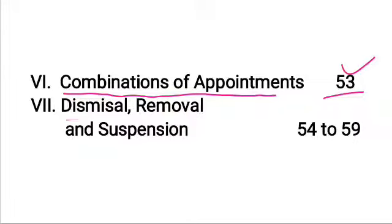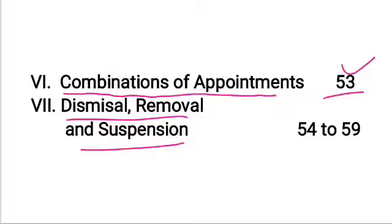Chapter 7 covers dismissal, removal, and suspension. Suspension procedures are outlined here, though the process is not fully detailed. Chapter 7 is covered under rule 54.